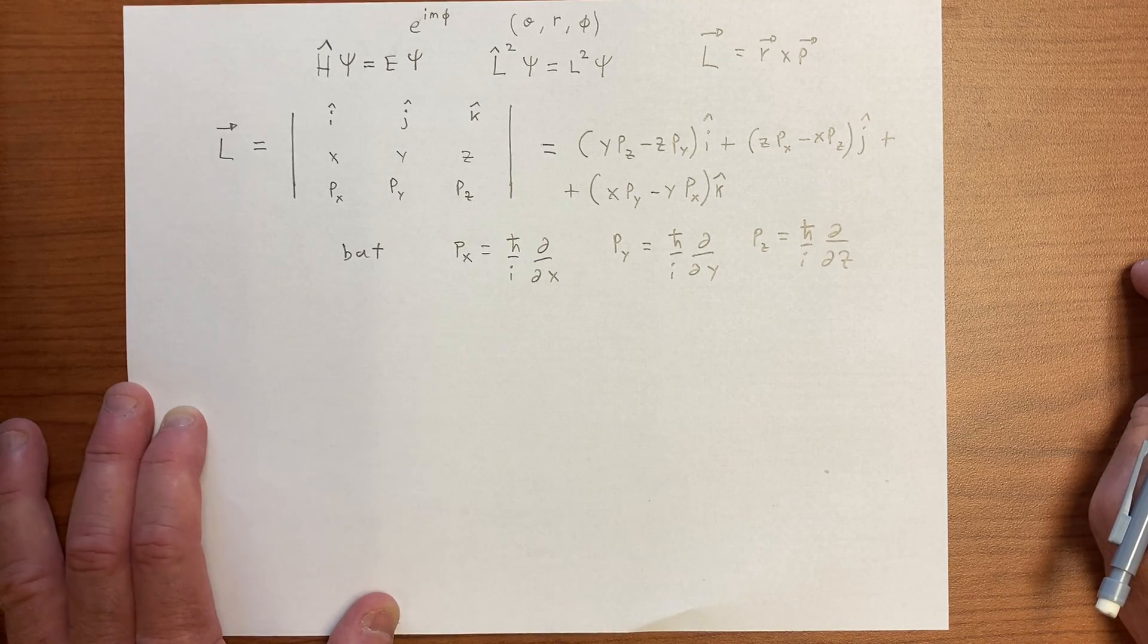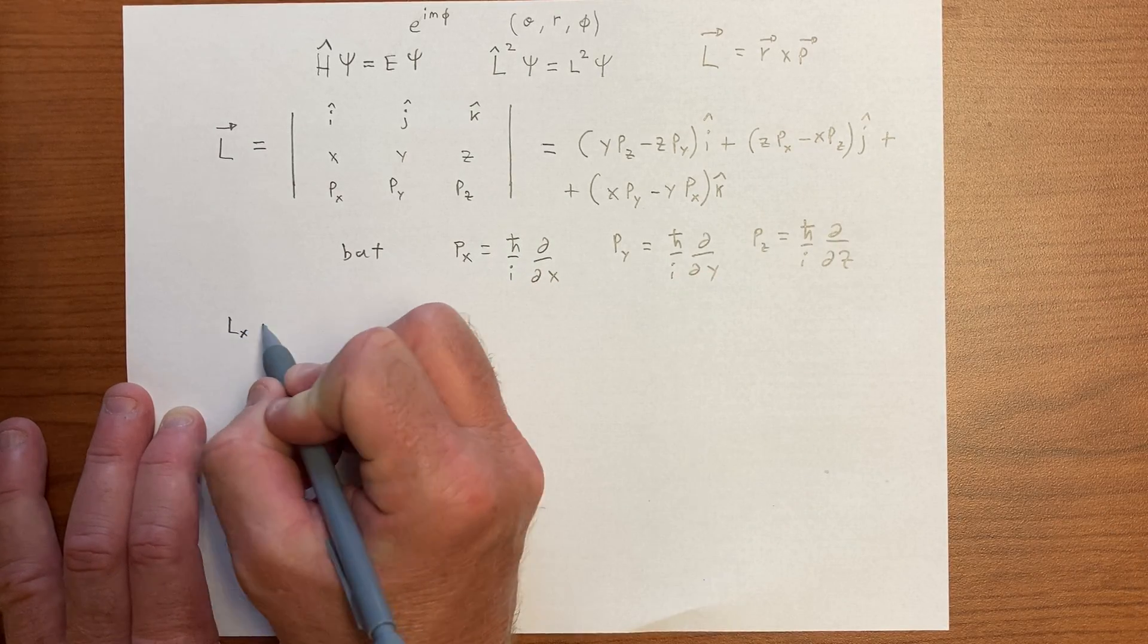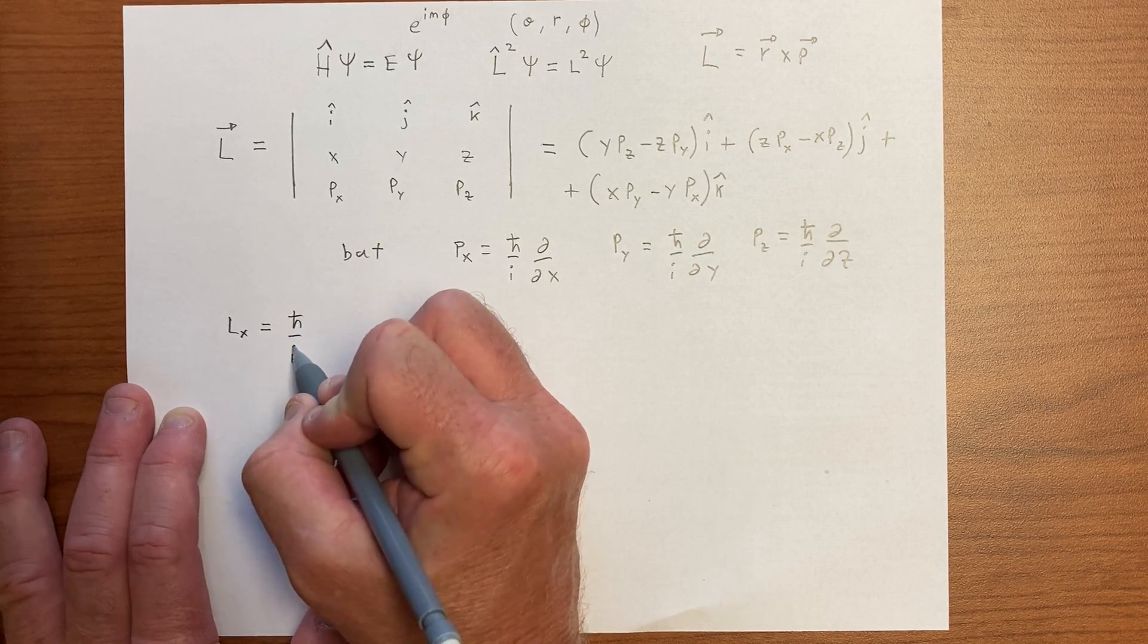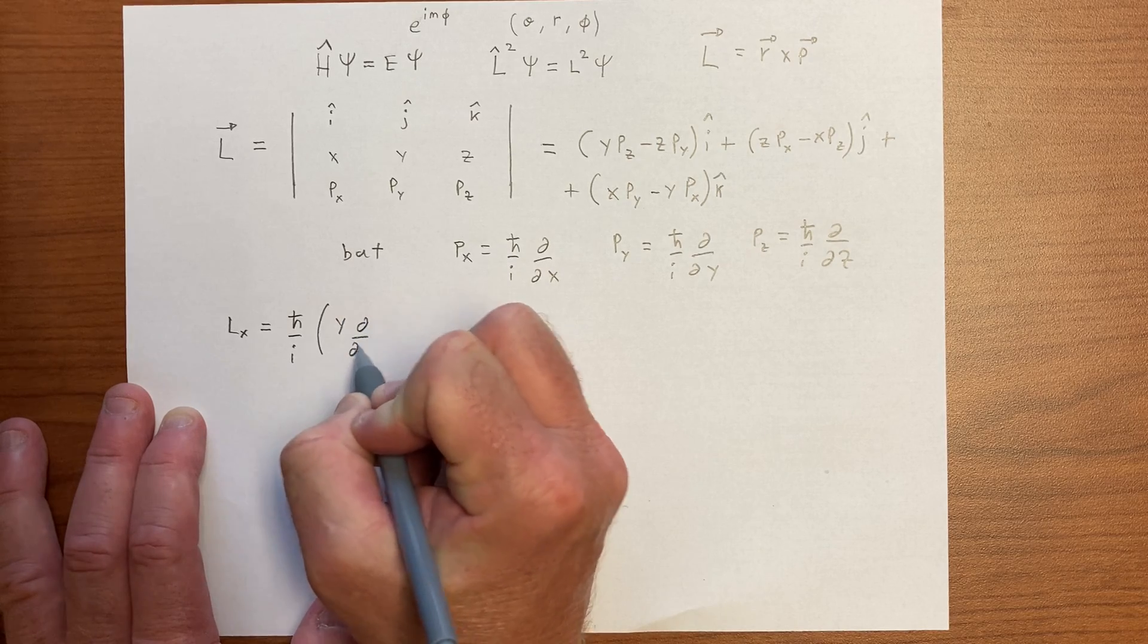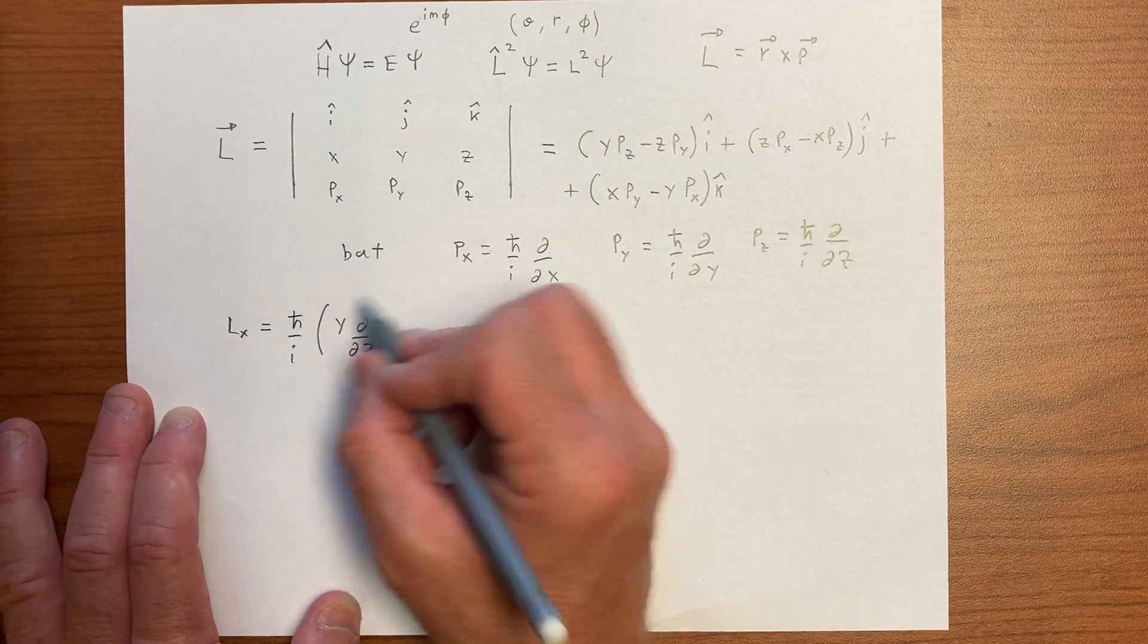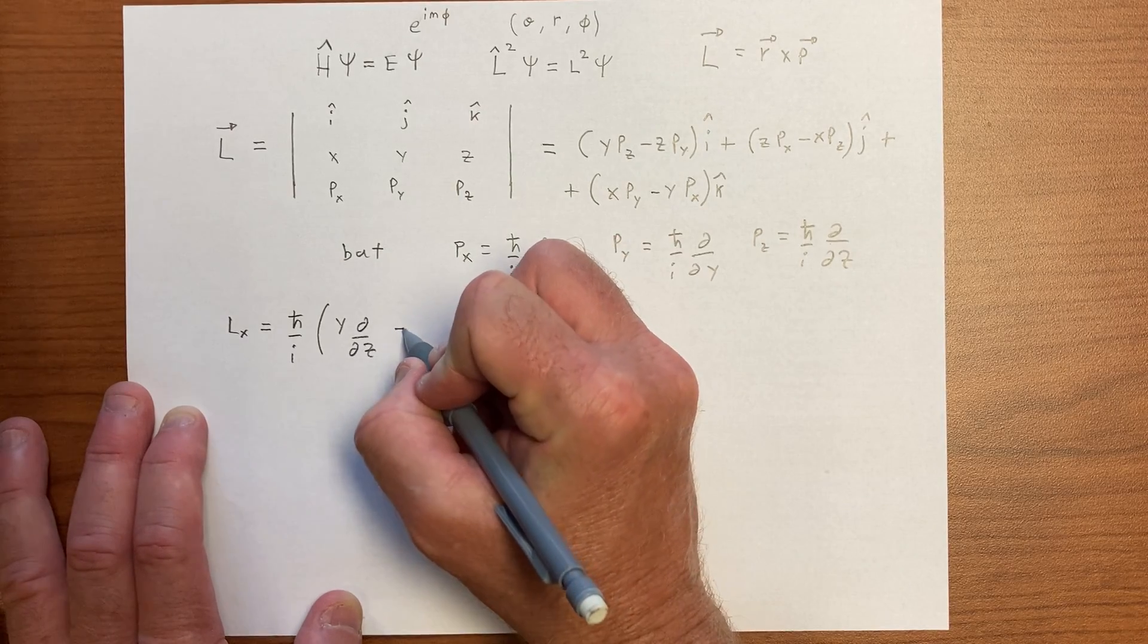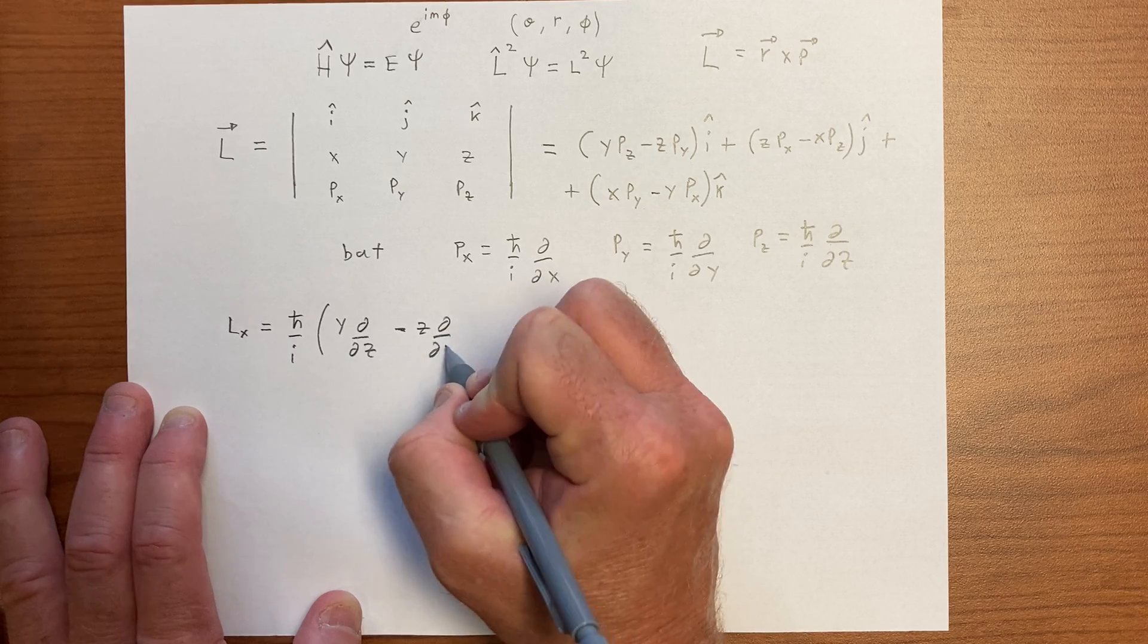And so we have that L_x becomes h bar over i, y d by dz, so we're doing this y d by dz, and we pull the h bar over i out, minus z d by dy.